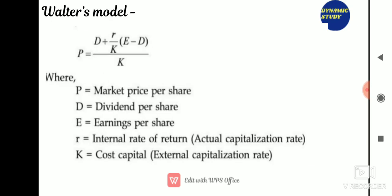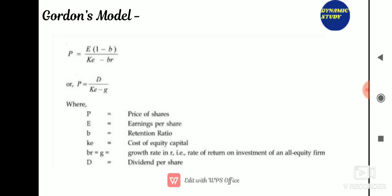Implications of Gordon's model: when r > Ke, the price per share increases as the dividend payout ratio decreases. When r = Ke, the price per share remains unchanged and is not affected by dividend policy. When r < Ke, the price per share increases as the dividend payout ratio increases. In Walter's model similarly: r > Ke means growth firm; r = Ke means normal firm; r < Ke means declining firm. Please note down these formulas and learn the implications.